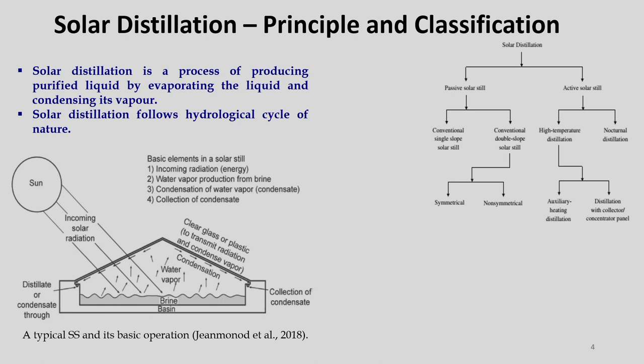What are the different elements of a solar still? We need incoming solar radiation as the energy source, which is utilized for evaporating water from the solar still. Then there is water evaporation from brine, condensation of water vapor, and finally collection of the condensate. The figure shows a typical solar still — a conventional double slope solar still of the symmetric type, meaning if you cut it in the center, both sides are identical.